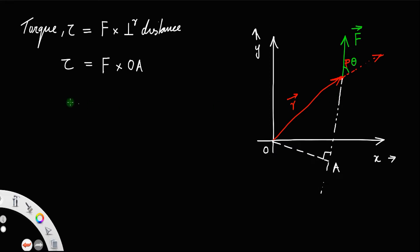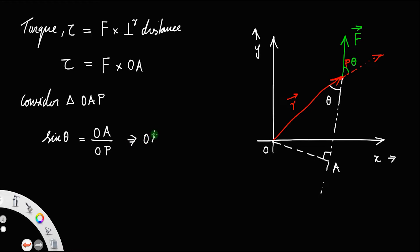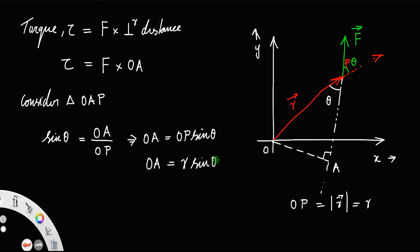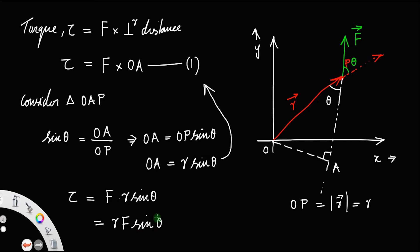If you consider triangle OAB, and if this angle is theta, then this angle will also be theta — vertically opposite angles. Then sin theta equals the opposite side OA divided by the hypotenuse OP, which implies OA equals OP sin theta. Since OP equals the magnitude of r, let us call that R, we get OA equals R sin theta — let us call this equation number one.